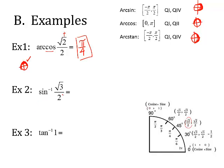Arc sine of square root of 3 over 2: first, decide what quadrants you're looking in. Arc sine comes from quadrants 1 or 4. Since it's positive, it's coming from quadrant 1. I'm looking for the angle that has a sine — a y value — of square root of 3 over 2. That is right here at pi over 3.